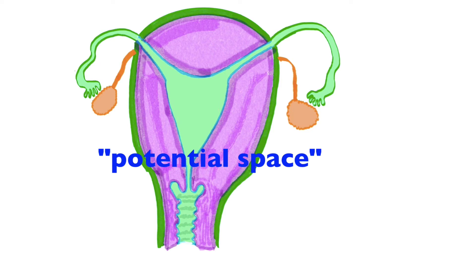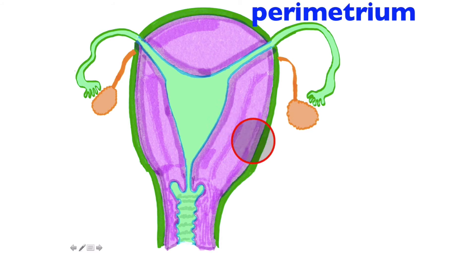When we talk about layers of the uterus, this green layer all the way around is known as the parametrium. In pink is the myometrium, and in light blue represents the endometrium. Parametrium, myometrium, and endometrium.